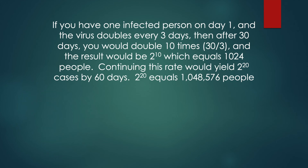Let's compare doubling every three days to doubling every six days. If you have one infected person on day one and the virus doubles every three days, then after 30 days you would double 10 times — 30 divided by 3 is 10 — and the result would be 2 to the 10th power, which equals 1,024 people. At this rate, you'd have 2 to the 20th cases by 60 days, and 2 to the 20th power equals 1,048,576 people.